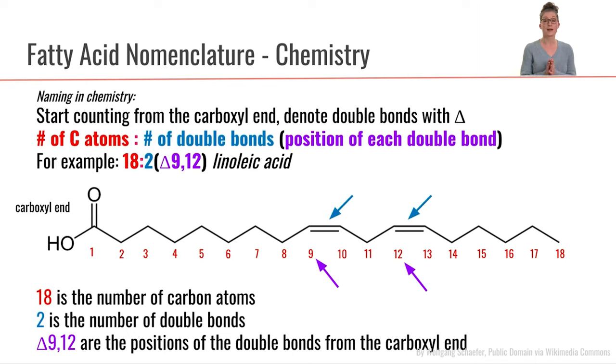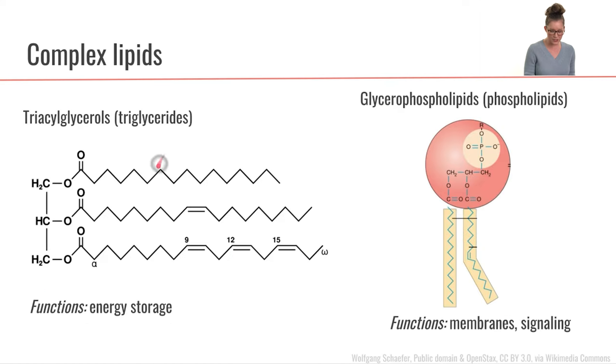As I mentioned before, if we were in the chemistry context, we would name things a little bit differently. In chemistry, they count the number of carbons starting at the carboxyl end. The other thing that they do when naming fatty acids in chemistry is they name the location of each of the double bonds. Additionally, they use the Greek letter delta to indicate this.